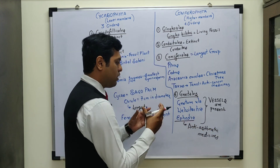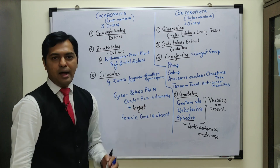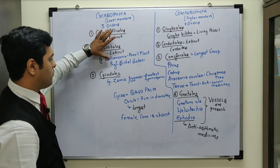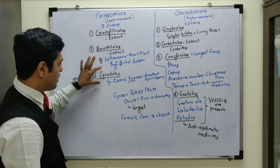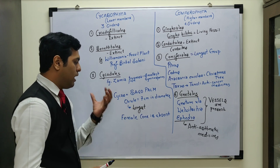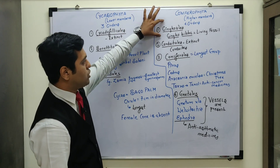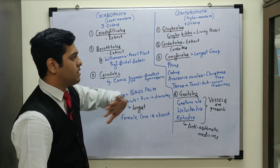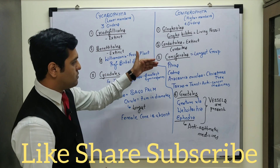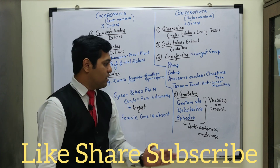Another important point is Ephedra — this plant has been used for making anti-asthmatic medicines, so it has certain medicinal properties and is of great economic importance. To summarize: Cycadophyta has orders mainly of extinct organisms, and Cycadales which has the smallest gymnosperm Zamia pygmia, while Cycas has the largest ovule and largest male gamete. In Coniferophyta, Ginkgo biloba is the living fossil, and Coniferales is the largest group with Pinus, Cedrus, Araucaria, and Taxus.